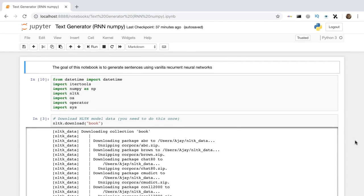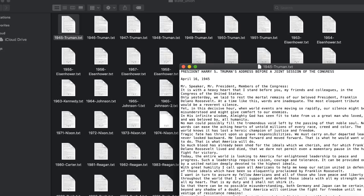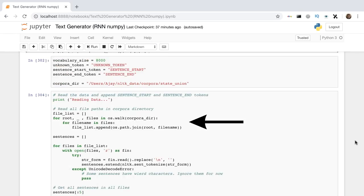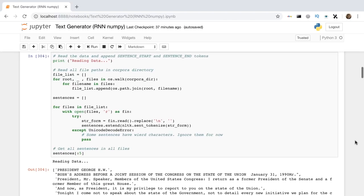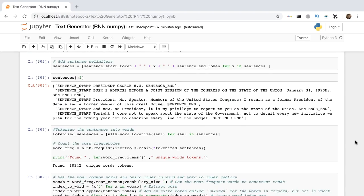First, download NLTK. We'll be using the State Union Corpora, which has speech transcripts dating back to the 1940s. We read all of these files and extract all sentences in a list. We add sentence delimiters to every single sentence. It's required to let our RNN know what is the start and end of a sentence.